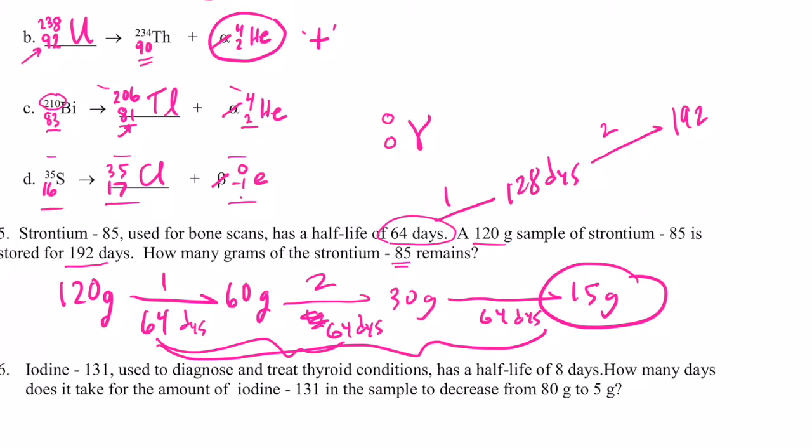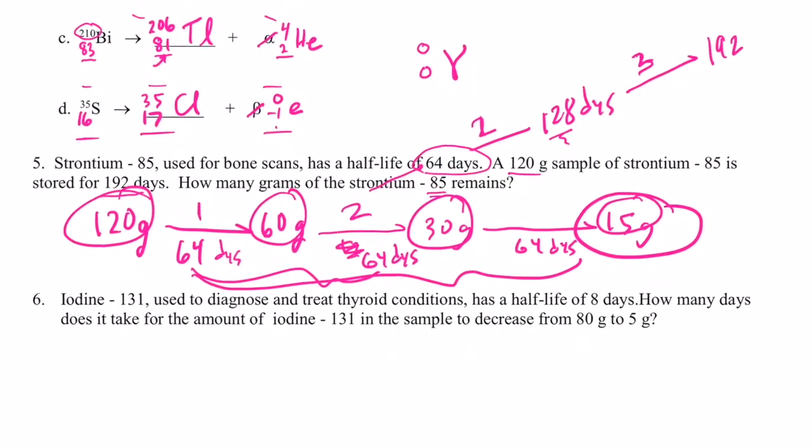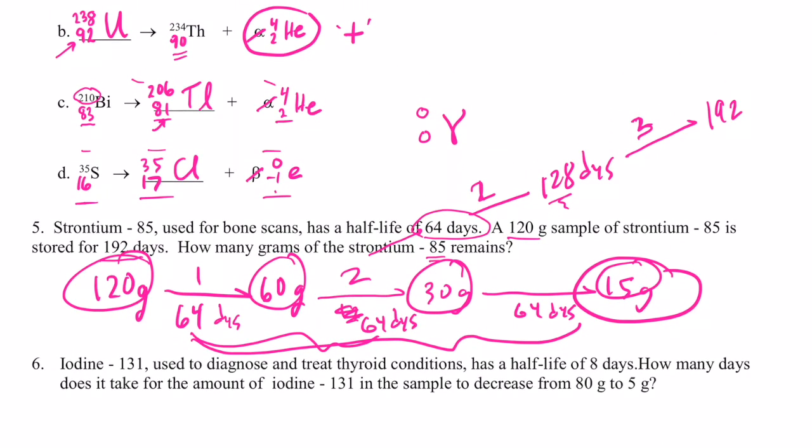So after the first 64 days, that's one half-life. Then 128 days, that would be two half-lives. Then 64 days later would be my 192 days, which is three half-lives. So we go from 120 to half of that, which is 60. That's my first half-life. To half of that, which is 30. That's my second half-life. To half of that, which is only 15, which would be a total of 192 days or three half-lives.